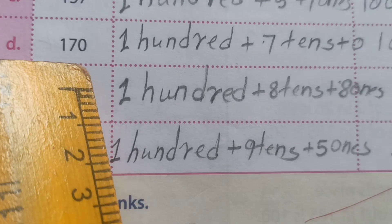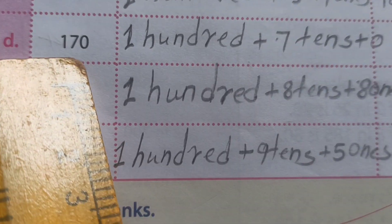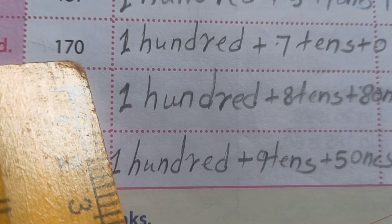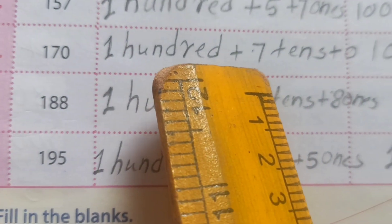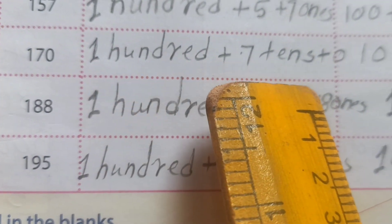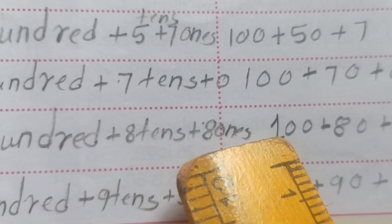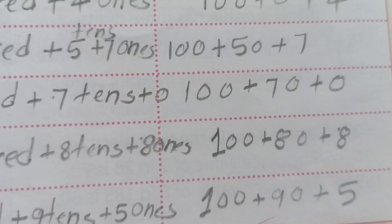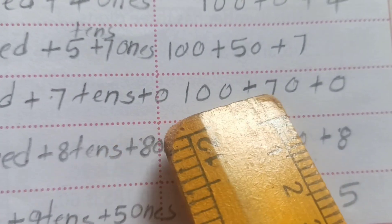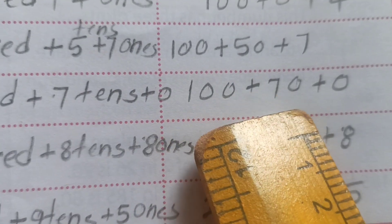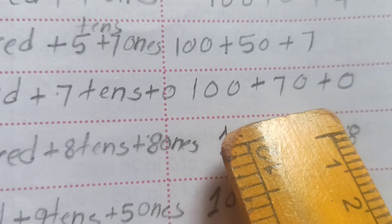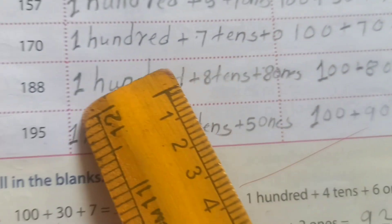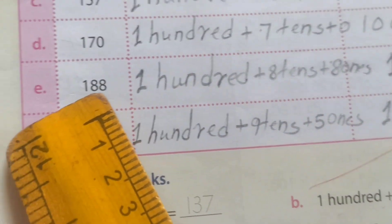D number: 170. How we read this one number? 100. 70 means 7 tens. And 0 ones. So: 100 plus 70 plus 0 ones.